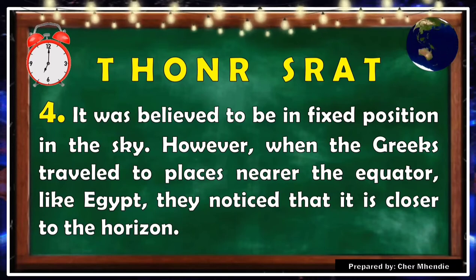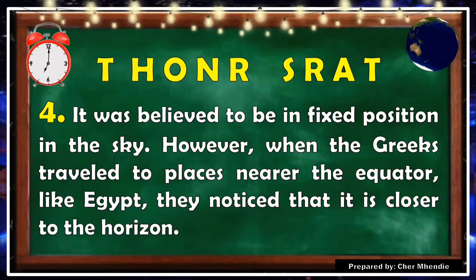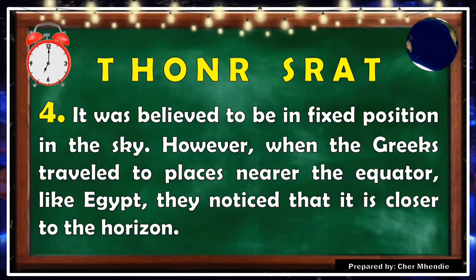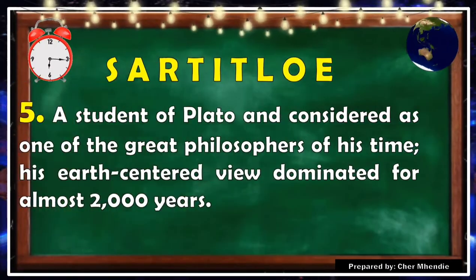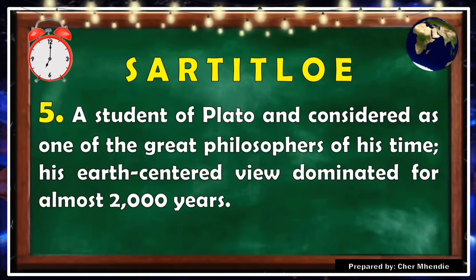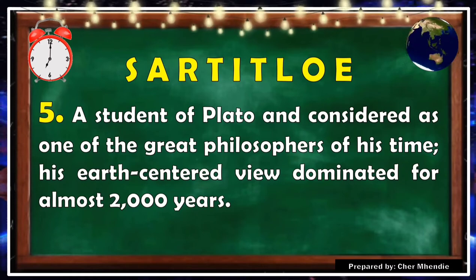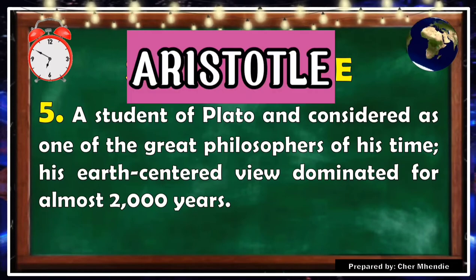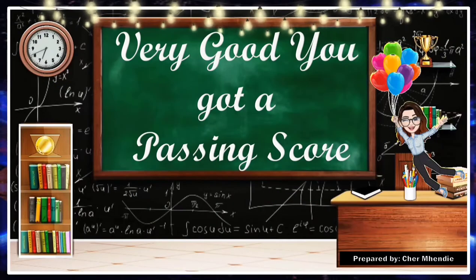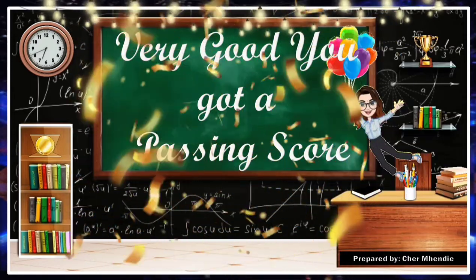The correct answer for number four is North Star. And the last number, number five: A student of Plato and considered as one of the great philosophers of his time, his earth-centered view dominated for almost 2,000 years. The correct answer is Aristotle. Very good, my dear student — you got a passing score!